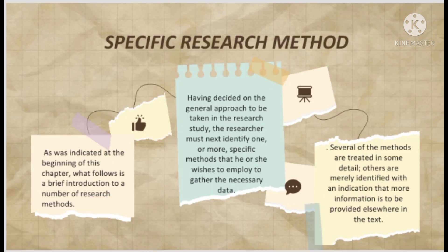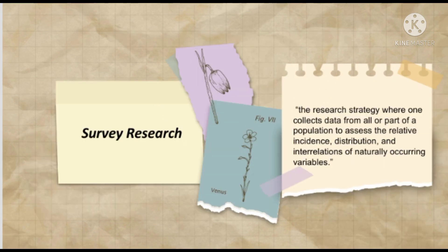Regarding specific research methods — having decided on the general approach, the researcher must next identify one or more specific methods to gather the necessary data. Survey research is identified as the research strategy where one collects data from all parts of a population to assess the relative incidence, distribution, and interrelations of naturally occurring variables. Survey research is one of the most important areas of measurement in applied social research.